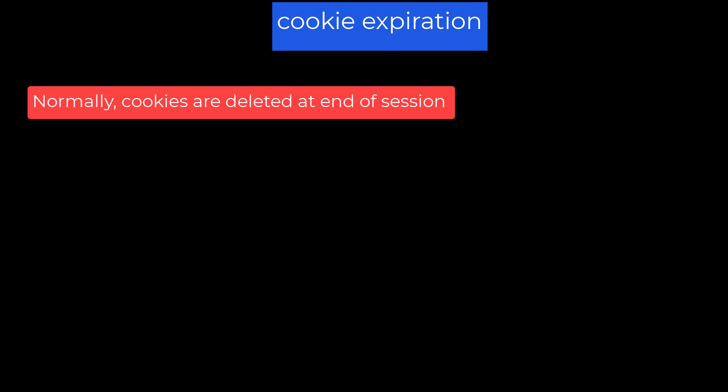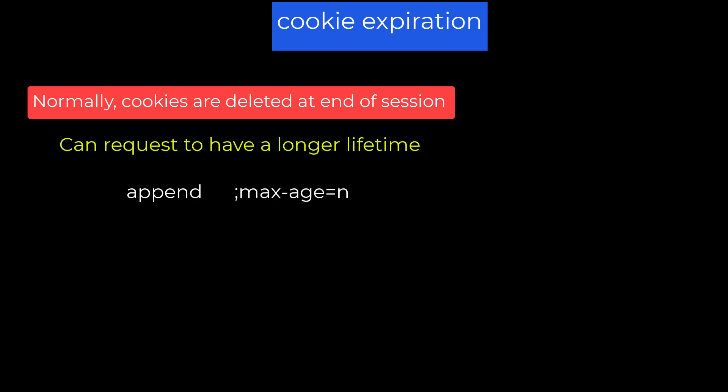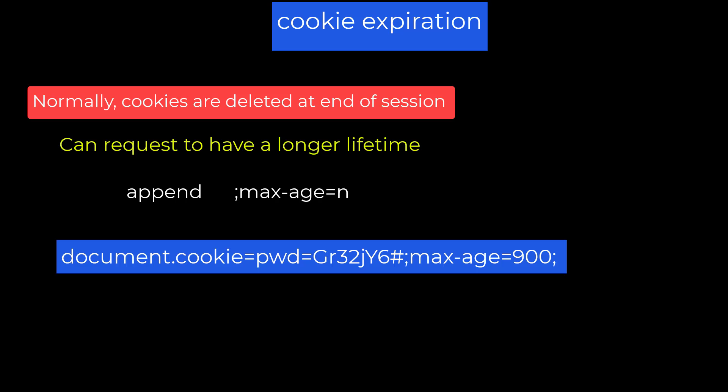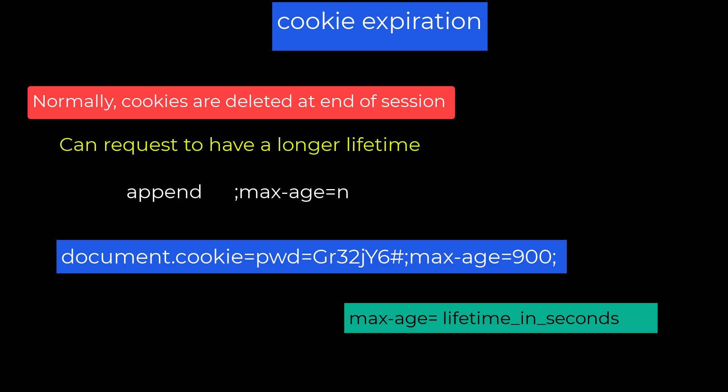Cookie expiration: as mentioned earlier, a cookie is normally deleted at the end of a session. However, you can request a cookie have a longer lifetime. This is done by adding a semicolon followed by maxAge equals some value. For example: document.cookie = 'pwd=gr32jy6#; maxAge=900'. The value for maxAge is the number of seconds the cookie should stay around. The default is zero, implying delete at end of session. Your browser defines what end of session means — usually either when the current connection is closed or when the browser is closed.